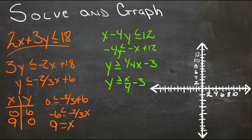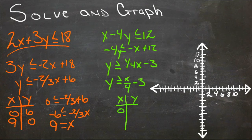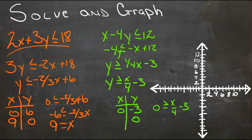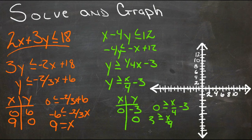For the second line, when x = 0, we get 0/4 - 3 = -3, so y = -3. When y = 0, we solve 0 = x/4 - 3, add 3 to get 3 = x/4, multiply by 4 to get x = 12.